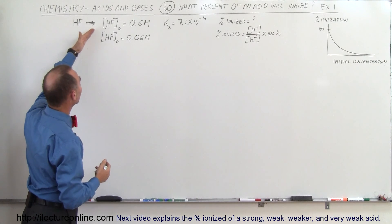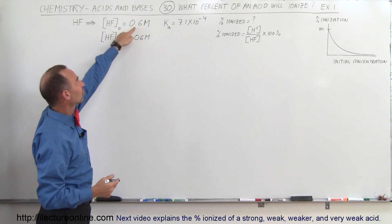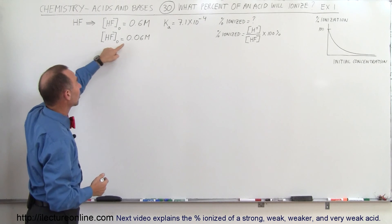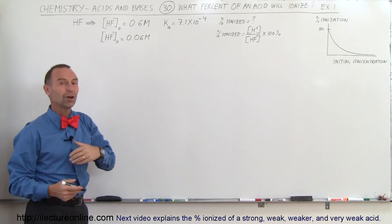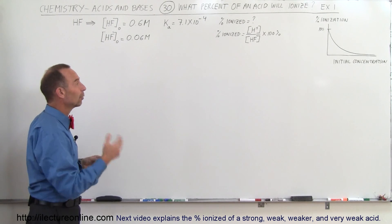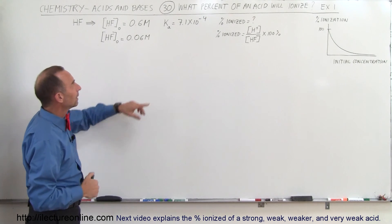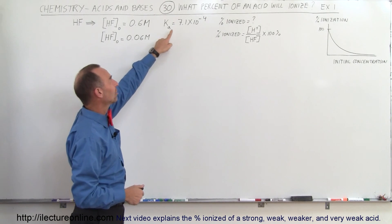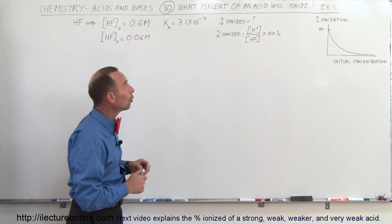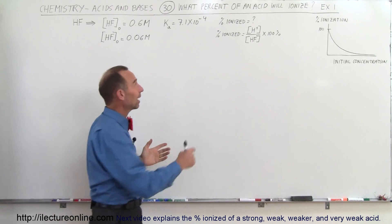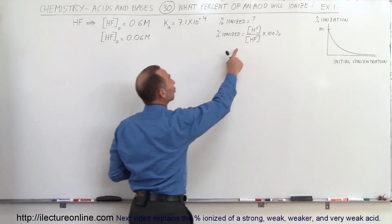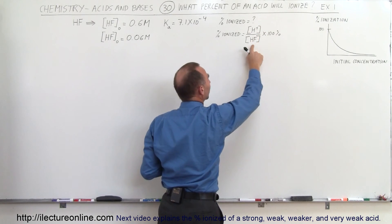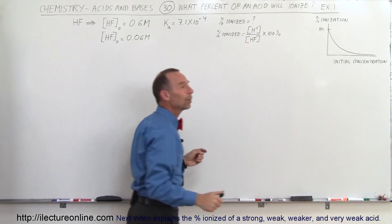We have hydrofluoric acid. We start first with a concentration of 0.6 molar, and then we'll do the problem again with a concentration of 0.06 molar — only 10% of the original concentration. The ionization constant for hydrofluoric acid is 7.1 times 10 to the minus 4, and the definition of percent ionized is the ratio of the final concentration of the hydrogen ion divided by the final concentration of the acid, times 100%.